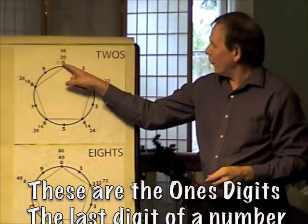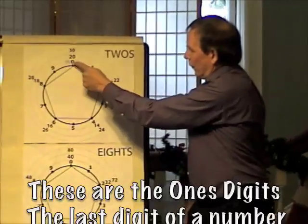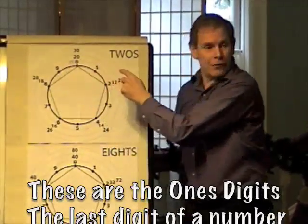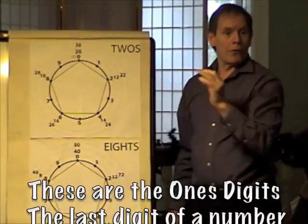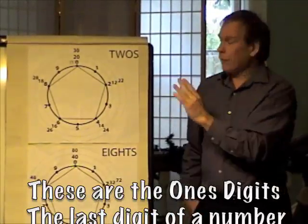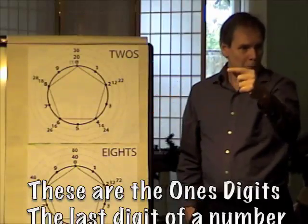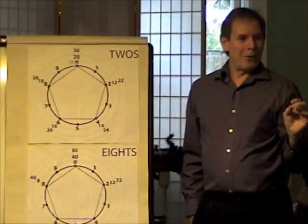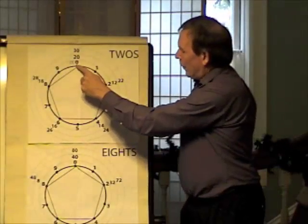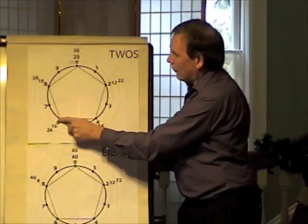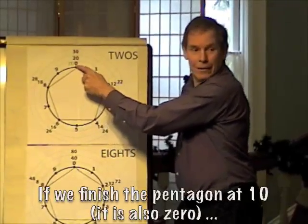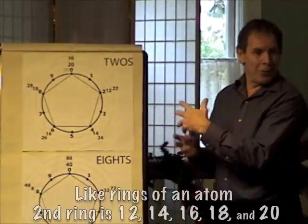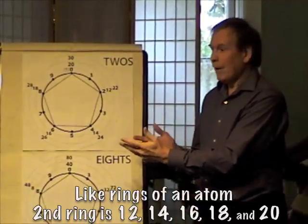This is a number wheel. It just goes around from 0 to 1, 2, 3, 4, 5, 6, 7, 8, 9, and back to 0. It's like the one-digit numbers, like one wheel of an odometer. So as you go around this, if you count by twos, you go from 0 to 2 to 4 to 6 to 8 and to 10, which is back to 0 again. You've created a pentagon.